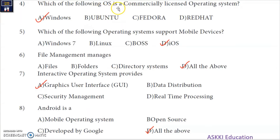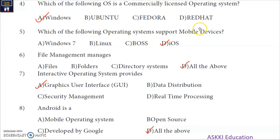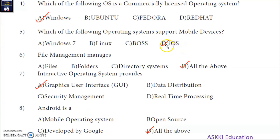Third question: Which of the following is not a function of an operating system? Fourth question: Which of the following OS is a commercially licensed operating system? — Windows is the answer. Fifth question: Which of the following supports mobile devices? Android phone or iPhone — iOS is the operating system for Apple devices, so iOS is the correct answer.